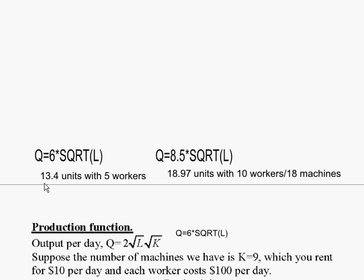Now in this case, we saw with 9 machines and 5 workers, we get 13.4 units of output. With double the resources, double the machines, and double the workers, did our output double?